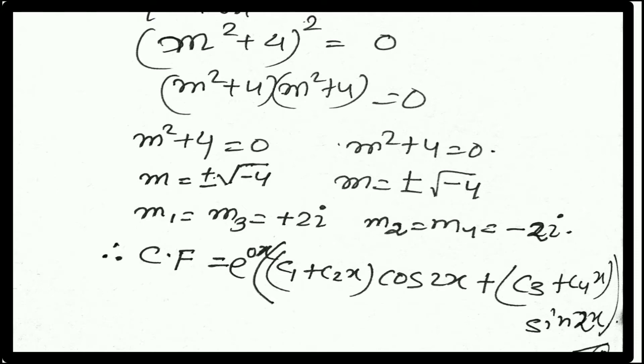m = ±√(-4), m = ±√(-4). √(-4) = 2i because √4 = 2 and √(-1) = i, which is imaginary quantity. Here, similarly, m² + 4 = 0 gives m = ±2i.